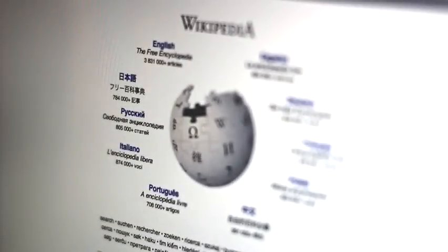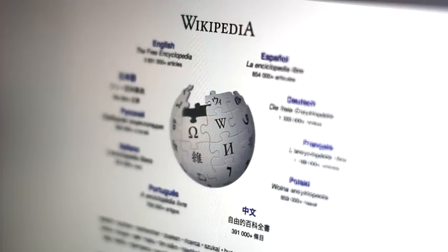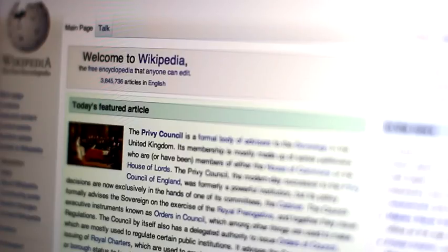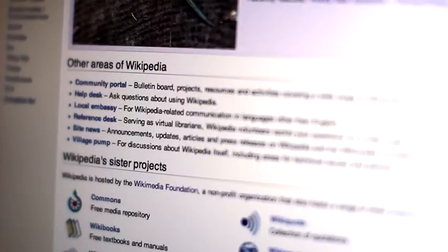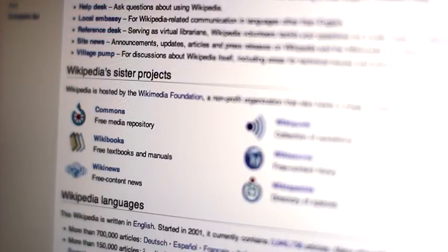Anytime you monetize something like Wikipedia or its other related projects, you start getting influences over what is appropriate content. Our goal is not to generate profits. By having a 501c3 status and being a not-for-profit, we hopefully can maintain a higher level of independence.